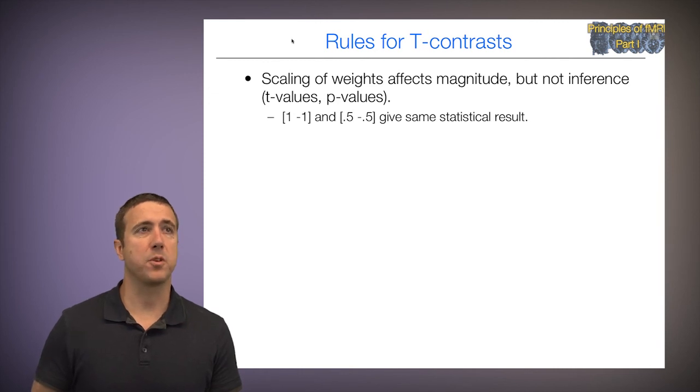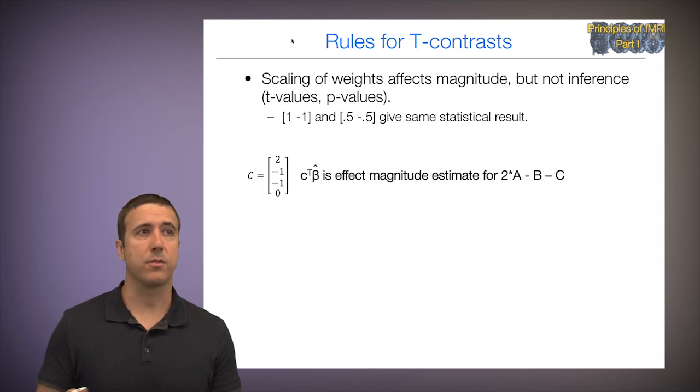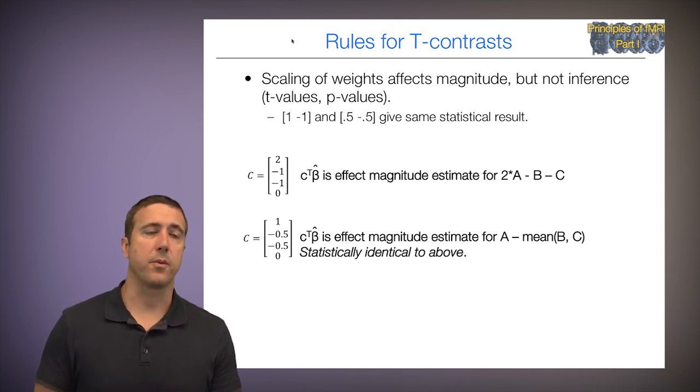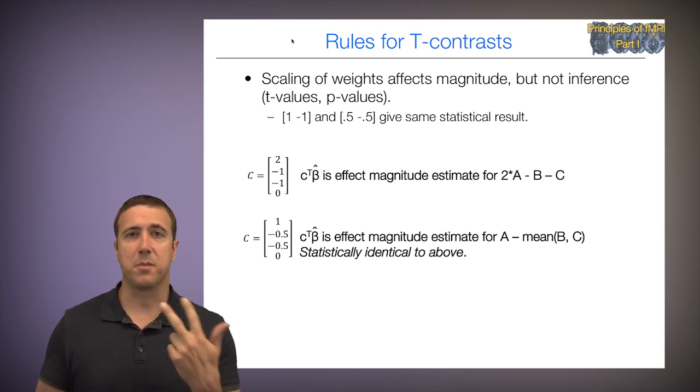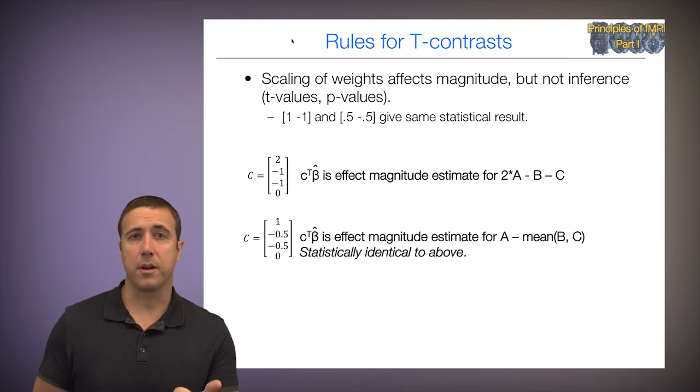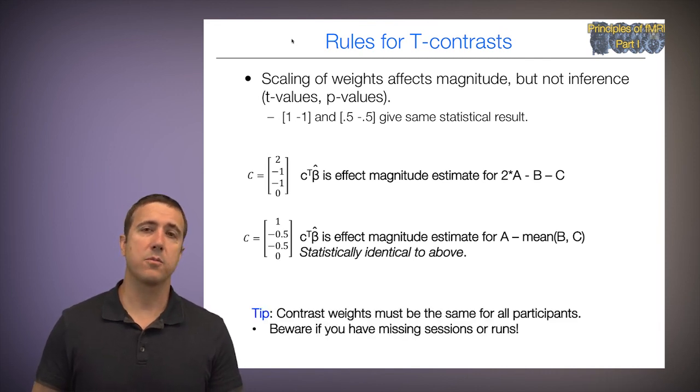Another rule is about scaling. So the scaling of the weights, the contrast weights, affects the magnitude of the contrast values, but not the inferences I make. So it doesn't affect the T values or the P values. So I can use contrast weights of 1, negative 1, or 0.5, negative 0.5, and get the exact same statistical result. So let's look at this case, where I've got this contrast 2, negative 1, negative 1. And this is twice A versus B minus C. And if I rescale the contrast weights to be 1, negative 0.5, negative 0.5, then the contrast value estimates A versus the mean of B and C. If these were four different sports teams, and I was testing memory effects of football players, hockey players, baseball players, and basketball players, you can see why you might want to test football players versus the average of hockey and basketball players, for example. So depending on what my question is, this can be quite useful. And here's one tip as we move forward. Contrast weights must be the same for all participants to keep all the participants' estimates on the same scale. And one way you can get into trouble is if you have missing sessions or runs. If you use contrast weights of 1s and negative 1s across the runs, they may not be on the same scale. We'll hear more about that in the second course.